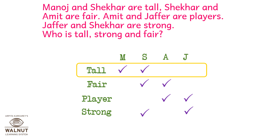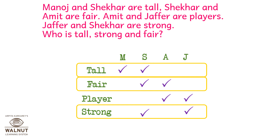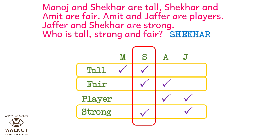So now we need to find out who is tall, strong, and fair. We see that only Shekhar has all three tick marks — tall, fair, and strong. So Shekhar is tall, strong, and fair.